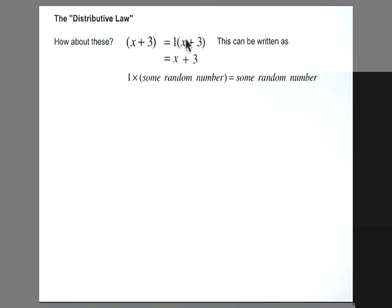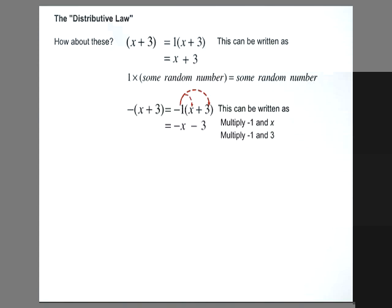So 1 times x is x and 1 times 3 is 3, exactly what we started out with. If I have a negative 1 in front, I'm going to distribute the negative 1 in to get negative x and negative 3.